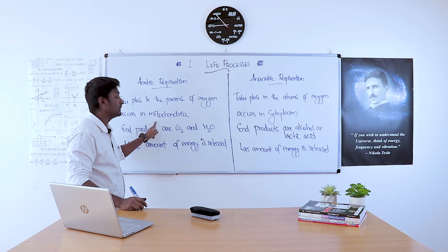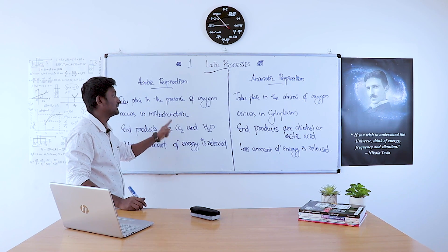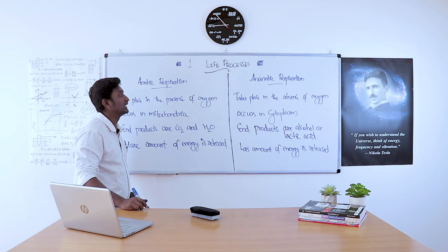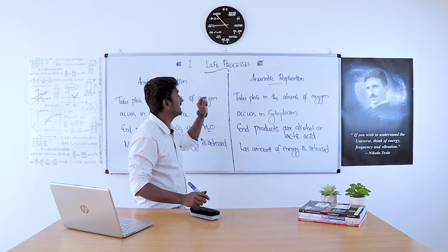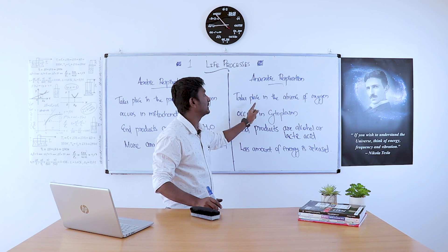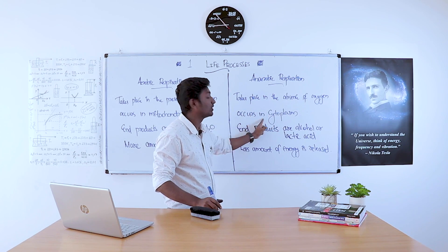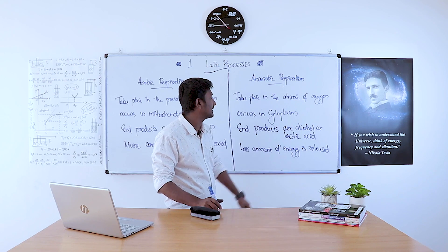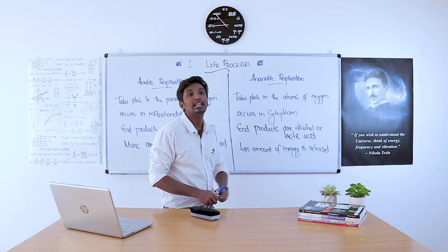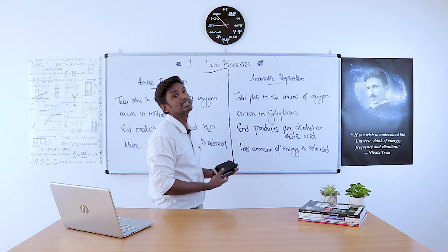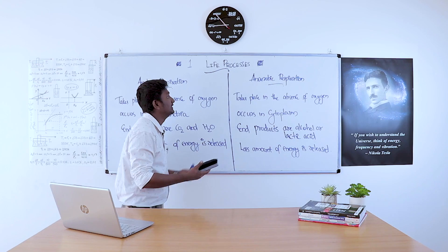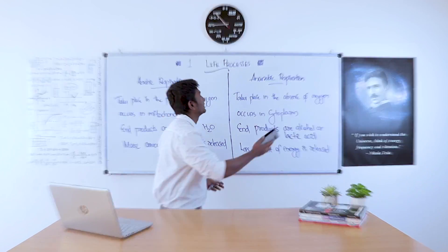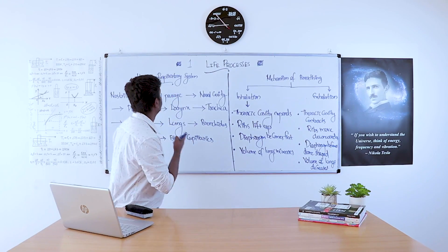To summarize: aerobic respiration takes place in the presence of oxygen, occurs in the mitochondria, produces CO₂ and H₂O, and releases more energy. Anaerobic respiration takes place in the absence of oxygen, occurs in the cytoplasm, produces alcohol or lactic acid, and releases less energy. These are the differences between aerobic and anaerobic respiration.